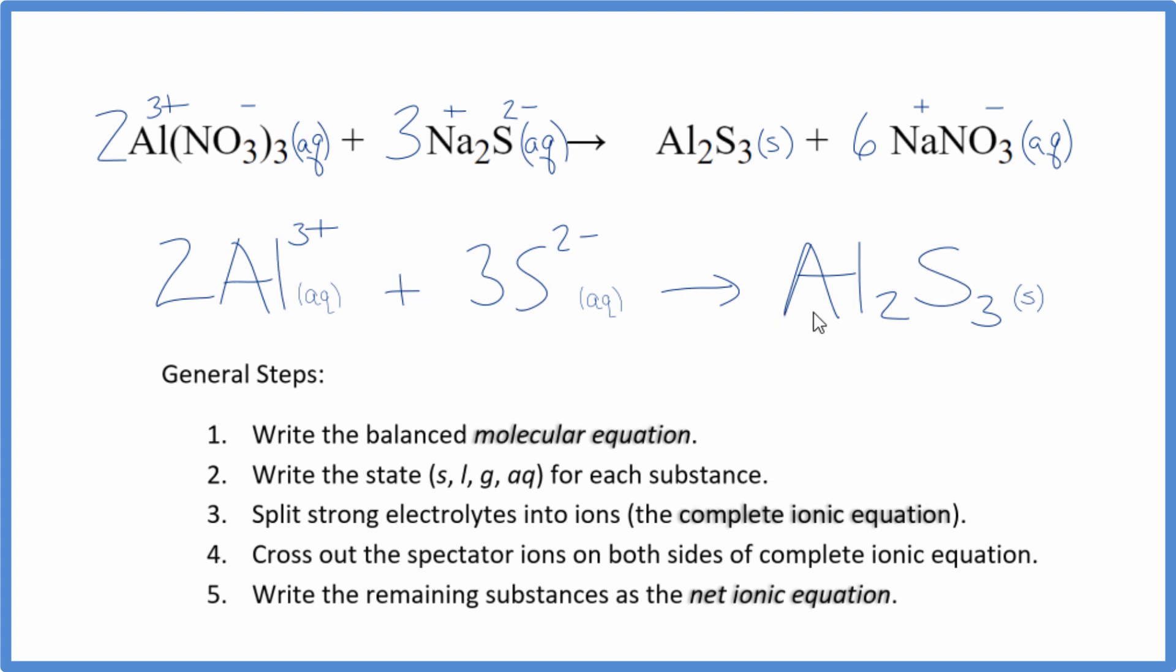And the atoms, they're balanced as well. Earlier, I made that mistake where I didn't have 6 nitrates. I'd catch that here, because if that was the case, this wouldn't work out for charge, and it wouldn't work out for the number of atoms.